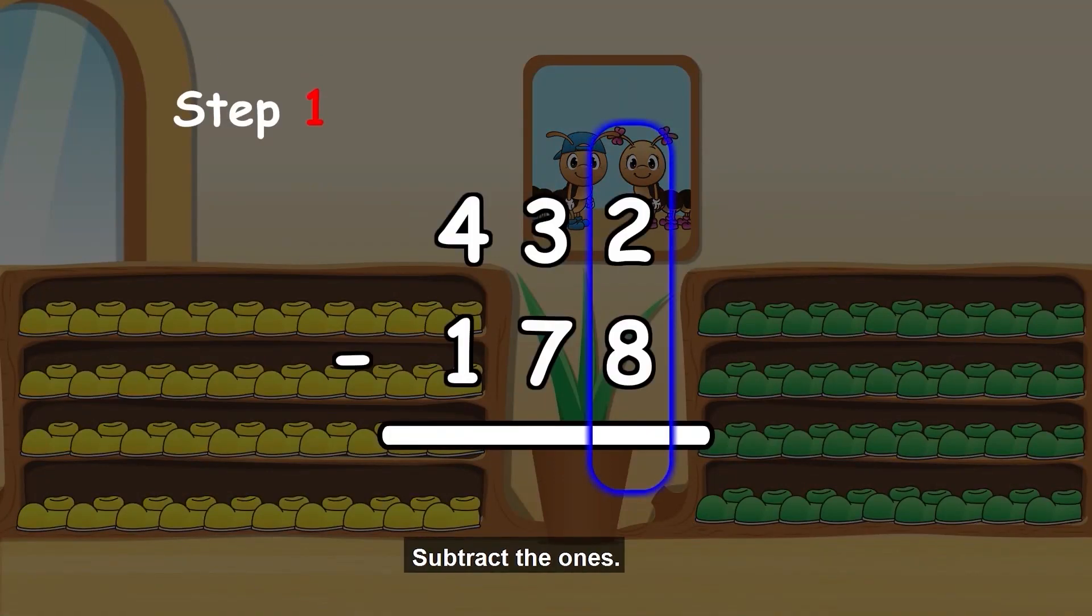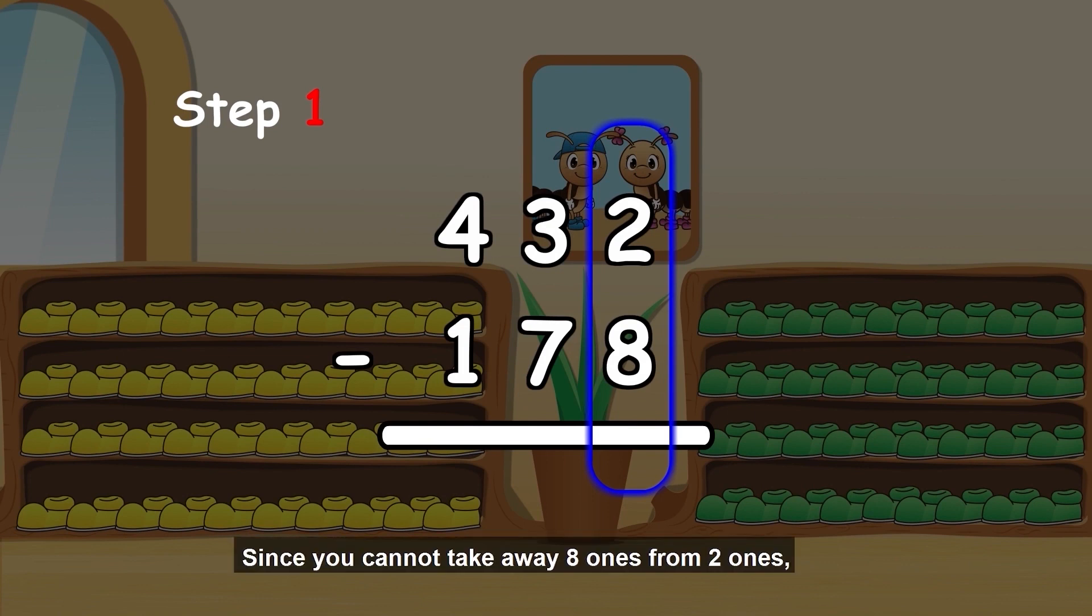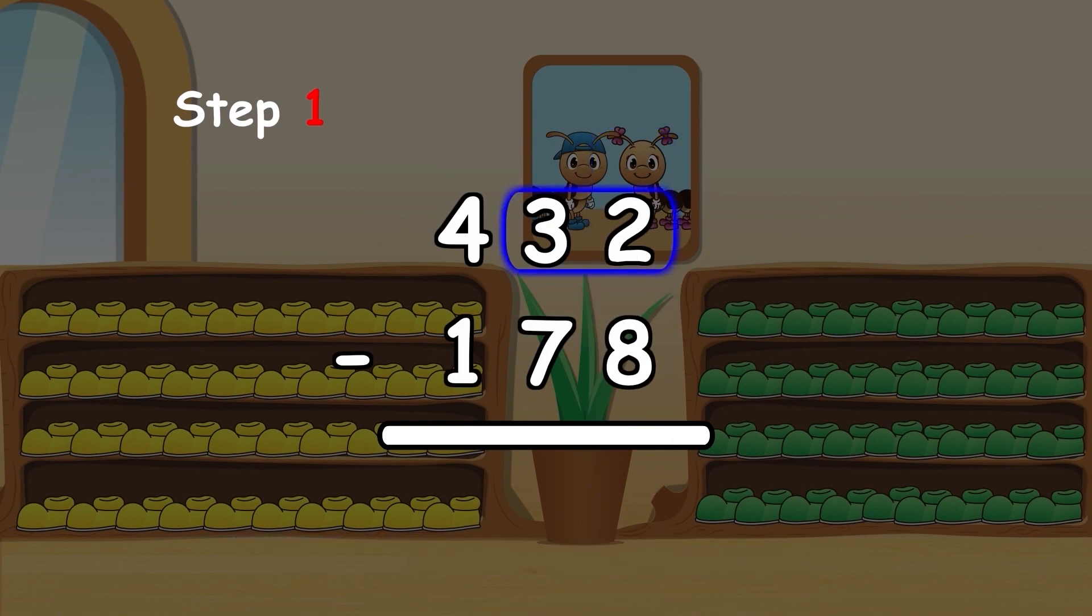Step 1. Subtract the ones. 2 minus 8. Since you cannot take away 8 ones from 2 ones, we regroup the tens and ones.